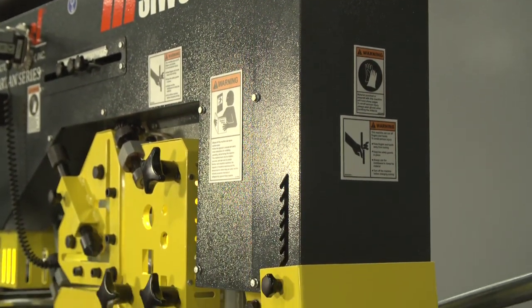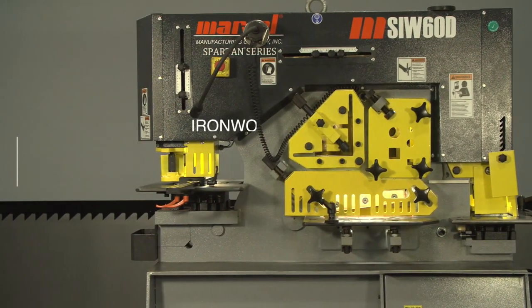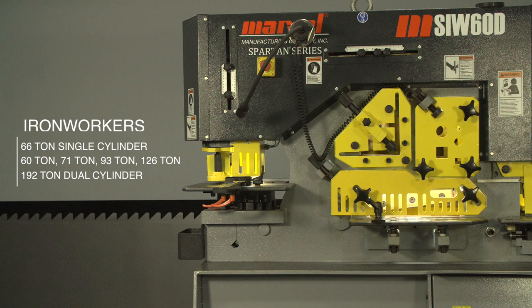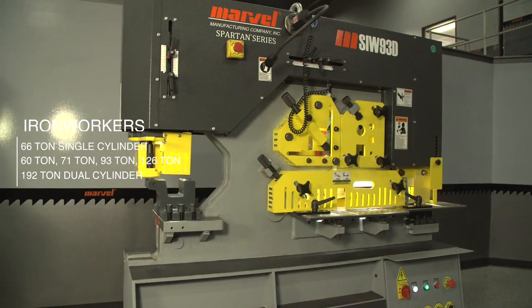Marvel's line of ironworkers are available in a variety of tonnage options: 66 ton single cylinder, 60 ton, 71 ton, 93 ton, 126 ton, and a 192 ton dual cylinder.